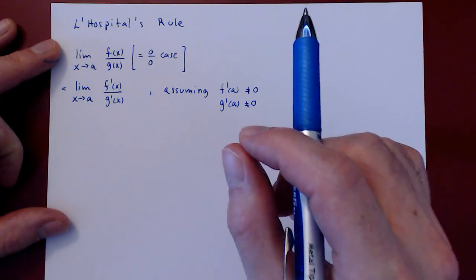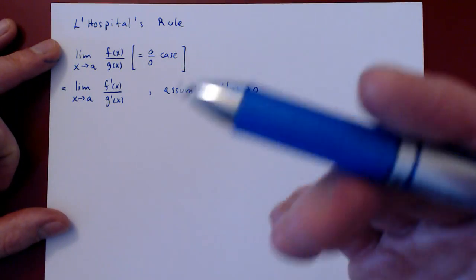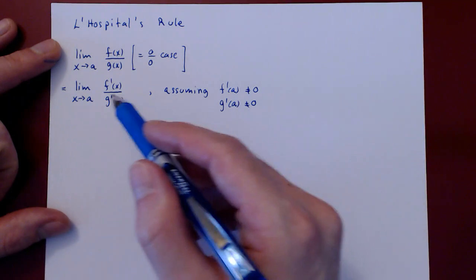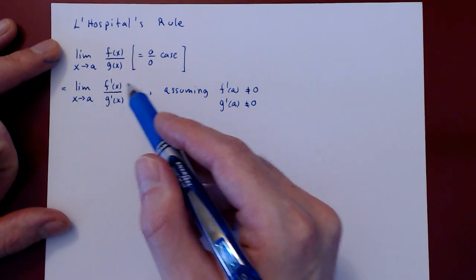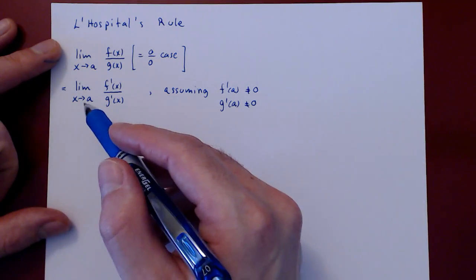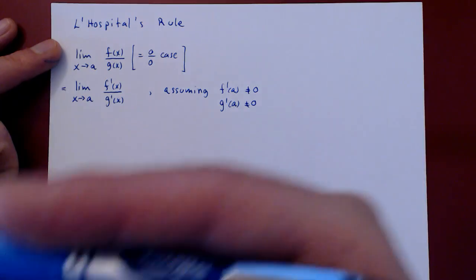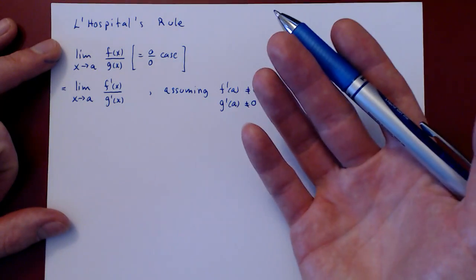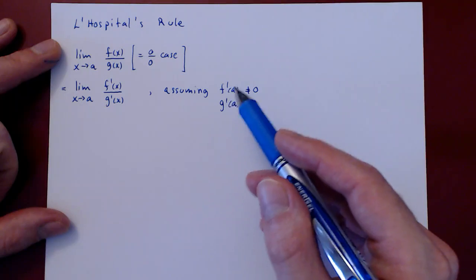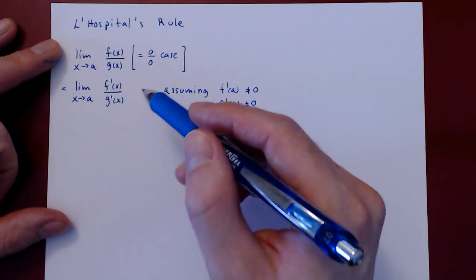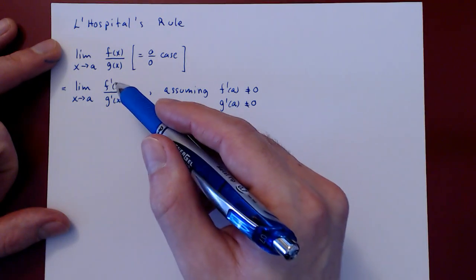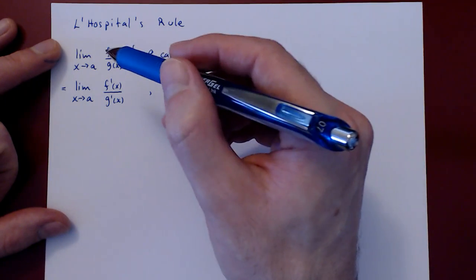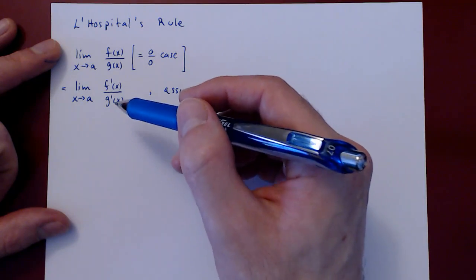For the sake of this simplified heuristic proof, we make two additional assumptions: that the new limit is no longer of the form 0 over 0. So we assume that as x approaches a, f prime of x approaches f prime of a and this is non-zero, and g prime of x approaches g prime of a and this is also not zero. Very soon we will be able to prove we can do without these assumptions — that as long as this limit exists, the original limit will equal the new limit of the ratio of the respective derivatives.